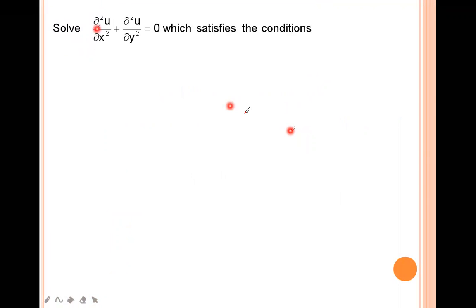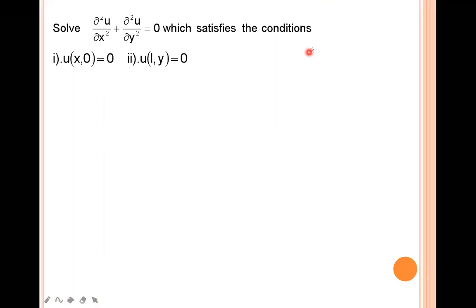Given: solve ∂²u/∂x² + ∂²u/∂y² = 0, which satisfies the conditions u(x,0)=0, u(l,y)=0, u(0,y)=0, and u(x,a) = sin(nπ/l · x). Using these boundary conditions, you have to solve the given two-dimensional heat equation in the case of steady state.